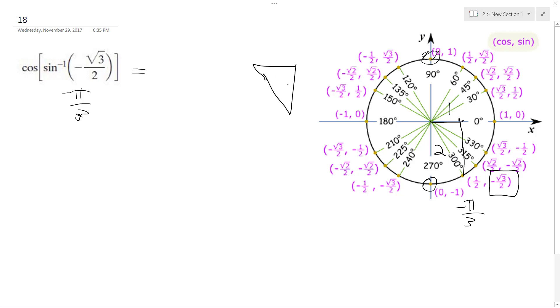So again, that's not quite right. It's negative root 3, 2, 1. So we just get 1 half.